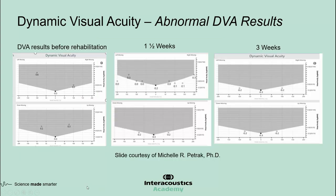This slide shows DVA results for a patient over the course of rehab therapy. Before rehab, the leftward DVA is significantly worse, but it improves over time and with therapy. This is really the most important feature of DVA because it tells you the level of impairment independent of the level of lesion. When you combine it with something like the VHIT, you can get both the presence of a lesion and the level of compensation.